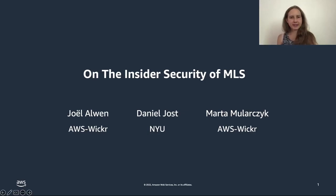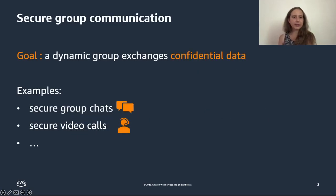The title of our paper is 'On the Insider Security of MLS.' This is a joint work with Joel Alvin and Daniel Joost, and I am Marta. The general area is that of secure group communication, where the goal is for a dynamic group of parties to exchange confidential data over an insecure network. By dynamic, I mean that group properties such as the name and the set of parties can change dynamically within an execution.